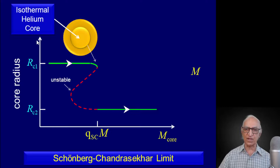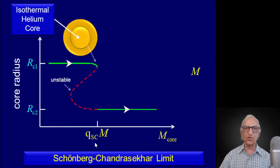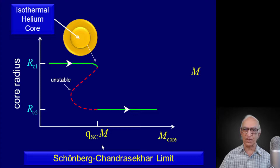What I have shown in this plot: on the vertical y-axis is the radius of the core increasing upward; on the x-axis is the mass of the helium core. A particular mass plotted here is Q_Schoenberg-Chandrasekhar times the mass of the star — not the mass of the core, but the mass of the star. So if it is a 3 solar mass star, that is 3 solar masses. Q_Schoenberg-Chandrasekhar is roughly 0.1. Therefore, this fiducial mark represents 0.1 times the mass of the entire star.